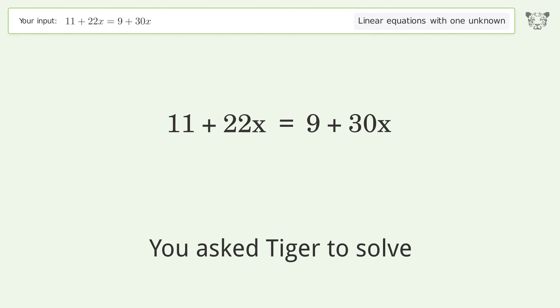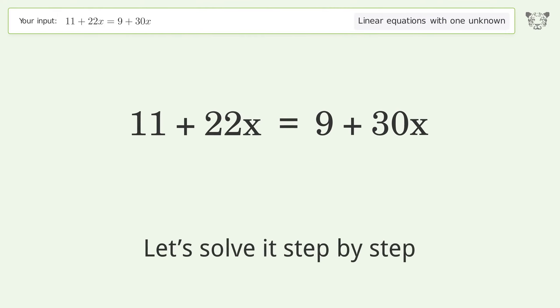You asked Tiger to solve. This deals with linear equations with one unknown. The final result is x equals 1 over 4. Let's solve it step by step.